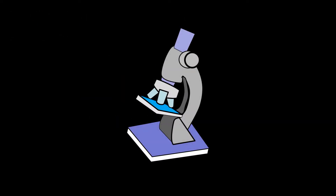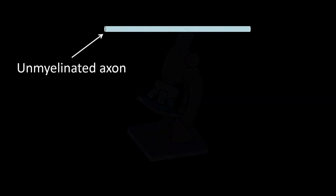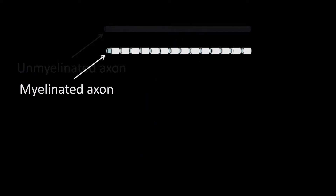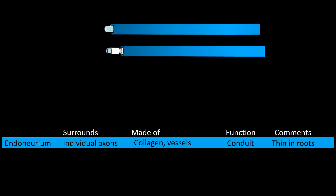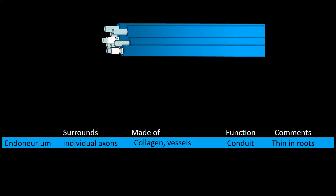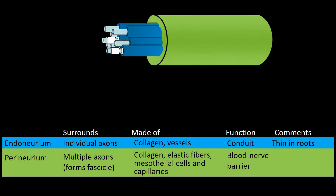Using the light microscope to look at nerves, we see unmyelinated axons and myelinated axons. Both are covered by endoneurium, a layer made of collagen and vessels that serves as a conduit for the axons. The endoneurium is particularly thin at the level of the roots. The axon, myelin, and endoneurium complex — especially those going to the same location — bunch together and are wrapped around by perineurium forming fascicles.